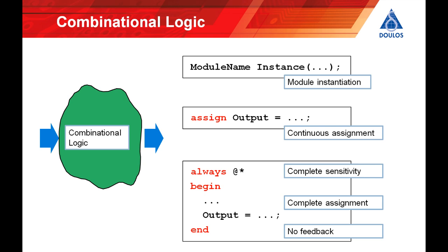Complete sensitivity means that the event control or sensitivity list at the top of the always block must include every single variable or wire that's read by the block which you can achieve in modern Verilog using the construct always at star. Complete assignment means that every single variable that's assigned within the always block must be assigned in every possible execution path through the always block otherwise you'd be inferring transport transparent latches. And finally no feedback means no feedback.